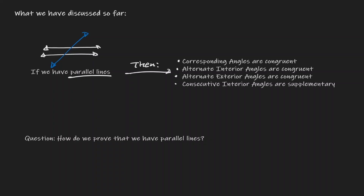But notice that here we were given the parallel lines, and these are the different conclusions. But now this raises the next question: how can you prove that you have parallel lines? In order for us to prove that we have parallel lines, we are going to be working with converse statements.